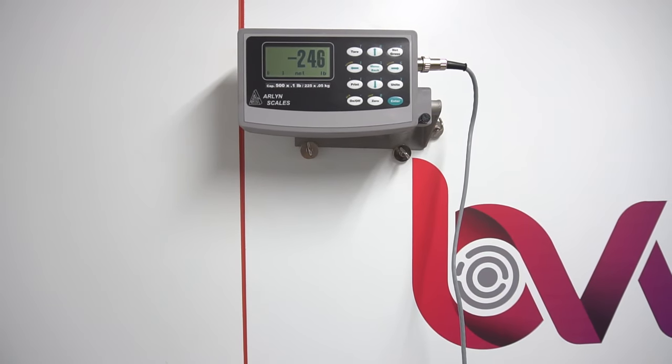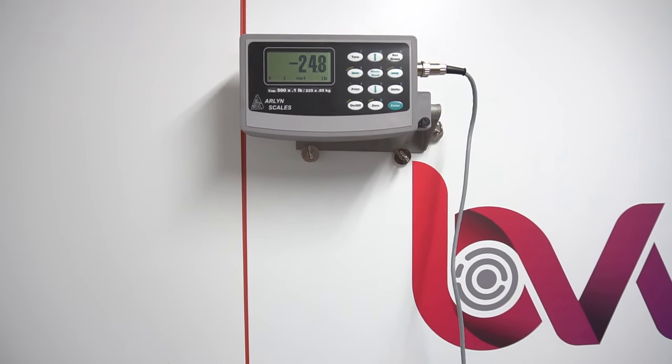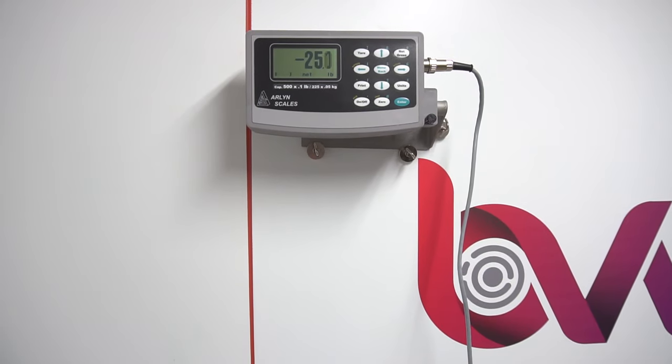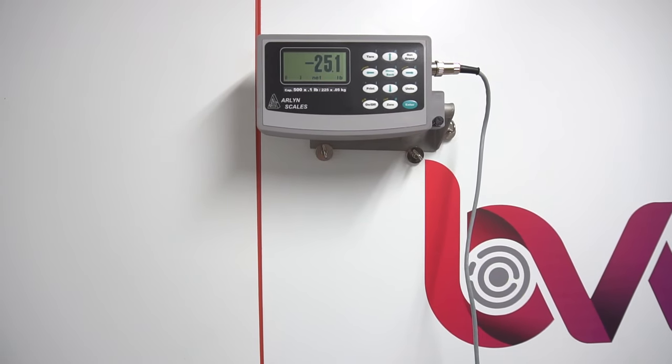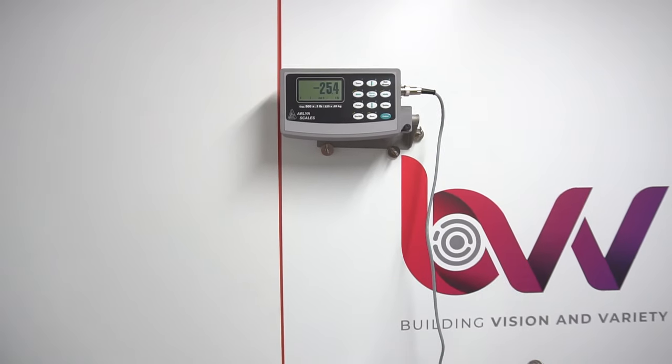As you can see, we're approaching the 25 pounds we wanted. We just take the absolute value of the number displayed on the scale and that's how we get what we want. So now that we're there, we're going to shut off our valves on the system.